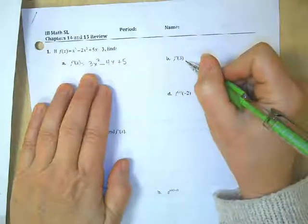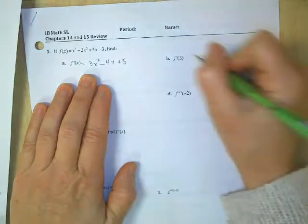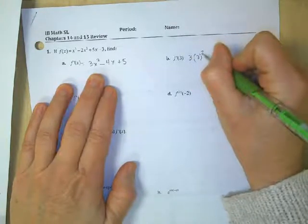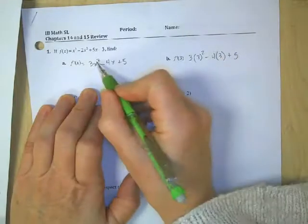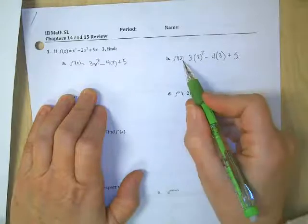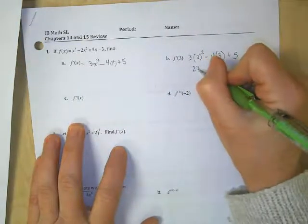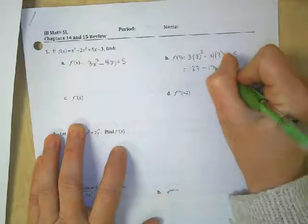Now we're going to evaluate the first derivative when x is equal to 3. So we're going to have 3 parentheses, 3 squared minus 4 times 3 plus 5. So I'm just placing in for my x the value of 3. 3 squared is 9. 9 times 3 is 27. Negative 4 times 3 is negative 12 plus 5.